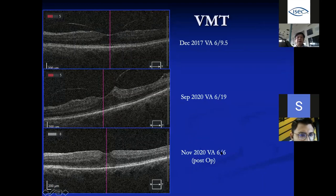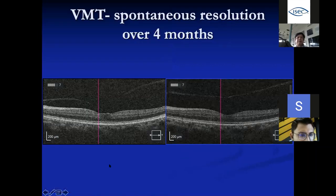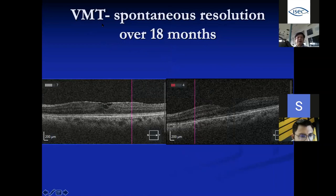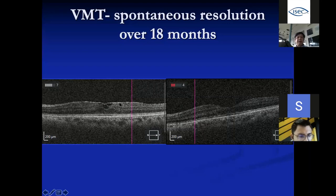VMT can sometimes be picked up on OCT, and we just watch — there's no need for immediate surgery. Sometimes it can resolve spontaneously because the adhesion breaks loose and there is no more traction on the retina. ERM is sometimes actually a condensation of the vitreous-retinal interface. If the membrane causes thickening but is not symptomatic, we observe. Not every case needs surgery.